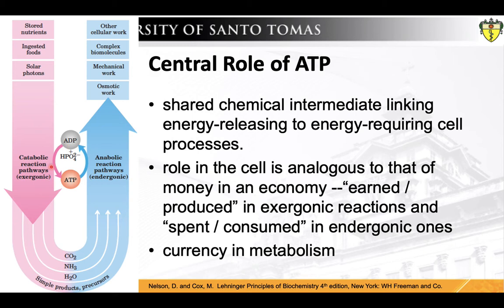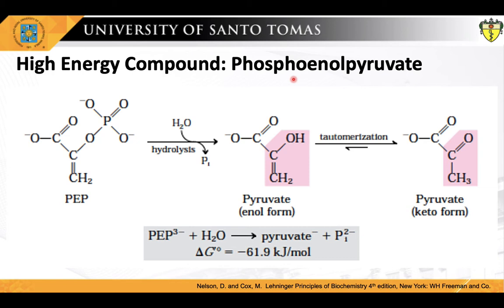Adenosine triphosphate plays a central role in metabolism. ATP is the shared chemical intermediate linking energy-releasing to energy-requiring cell processes. Its role in the cell is analogous to that of money in an economy — it is earned or produced in exergonic reactions and spent or consumed in endergonic ones. ATP is the major connecting link, or the shared intermediate, between the catabolic and anabolic components of the cellular metabolic network. The pathways of enzyme-catalyzed reactions that act on the main constituents of cells — proteins, fats, sugars, and nucleic acids — are virtually identical in all living organisms.